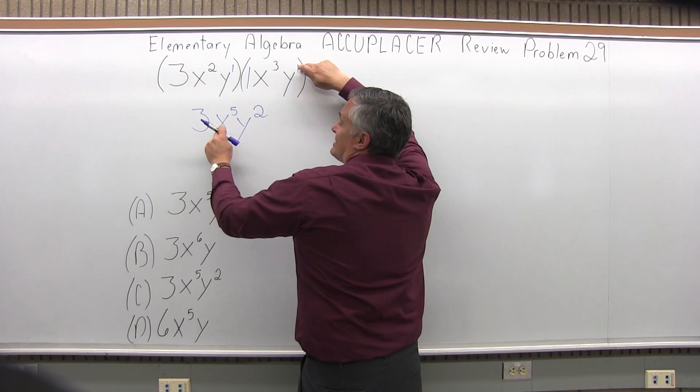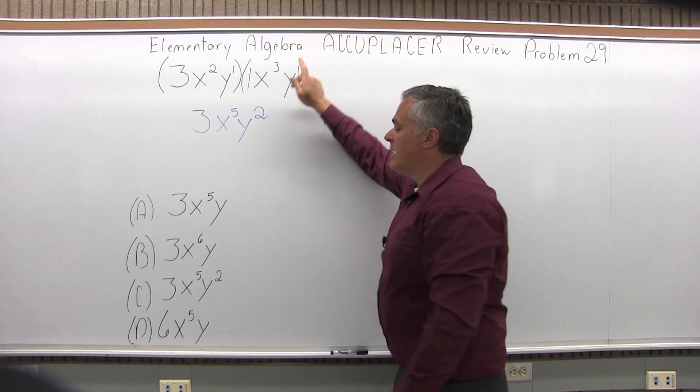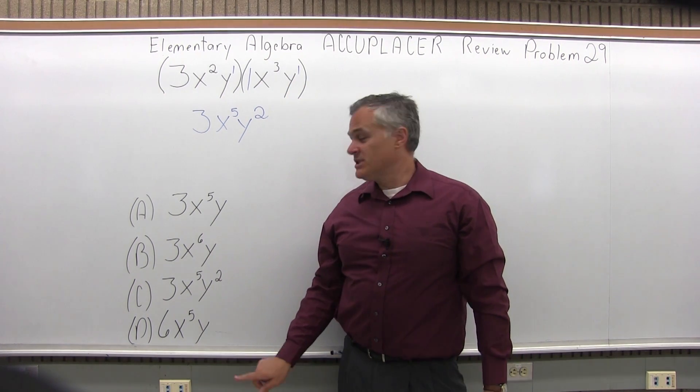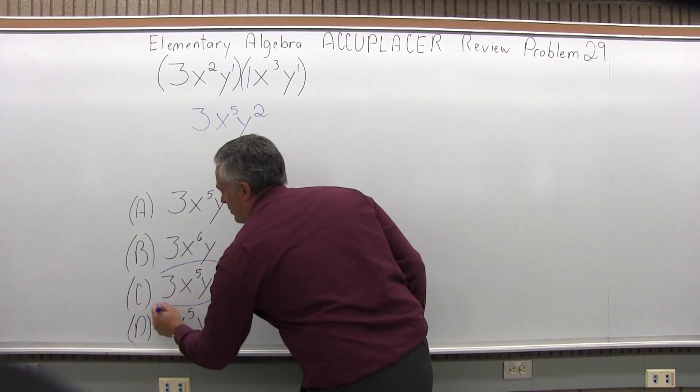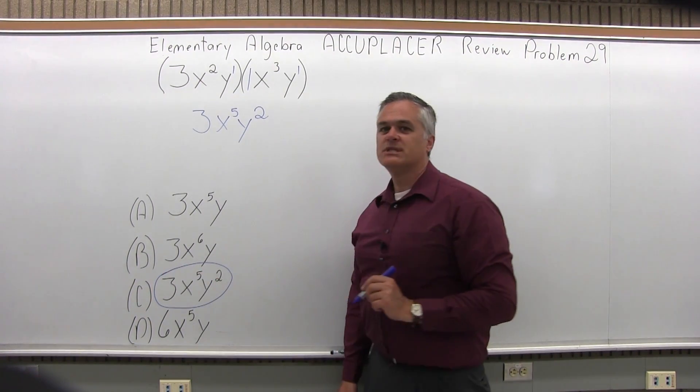So I get an answer of 3 x to the fifth y to the second power. As I check my list of options, option C is an exact match for the answer I got. So the answer for problem number 29 is option C.